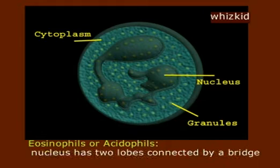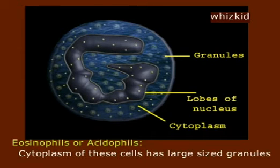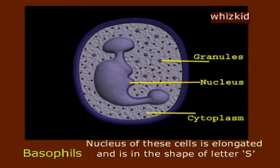Eosinophils or acidophils: the nucleus has two lobes connected by a bridge, and the cytoplasm of these cells has large-size granules. Eosinophil count increases in allergies and in certain infections.